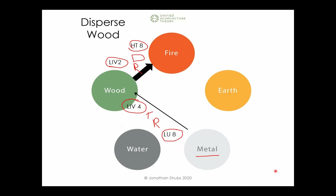Let me take a couple of quick questions. Correction: the tonification points — Liver 4 and Lung 8 — are on the left side, and we disperse Liver 2 and Heart 8 on the right side. So tonification of Liver 4 and Lung 8 on the left side, dispersion of Liver 2 and Heart 8 on the right side.